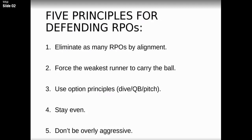Number three: use option principles. Everything now is basically triple option — that's essentially what they're using. If you look at a zone read bubble scheme, it is a dive by the running back, the quarterback can pull it, and the pitch is the bubble. Some offenses are even taking it to where the quarterback pulls it, runs towards the line of scrimmage, and then flips it out to the receiver at the very last second.